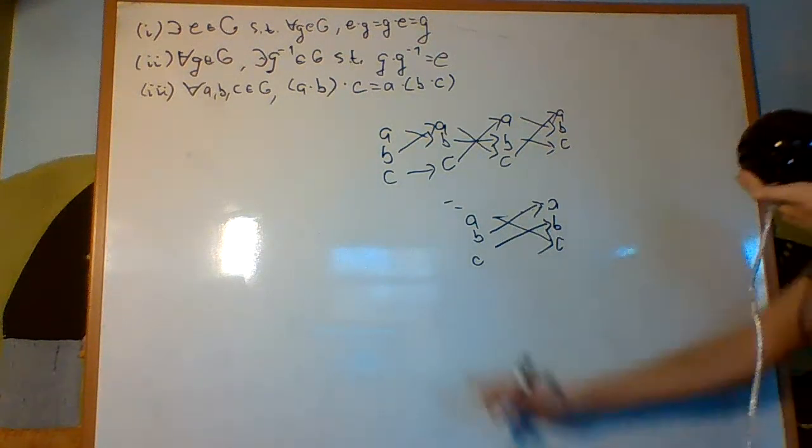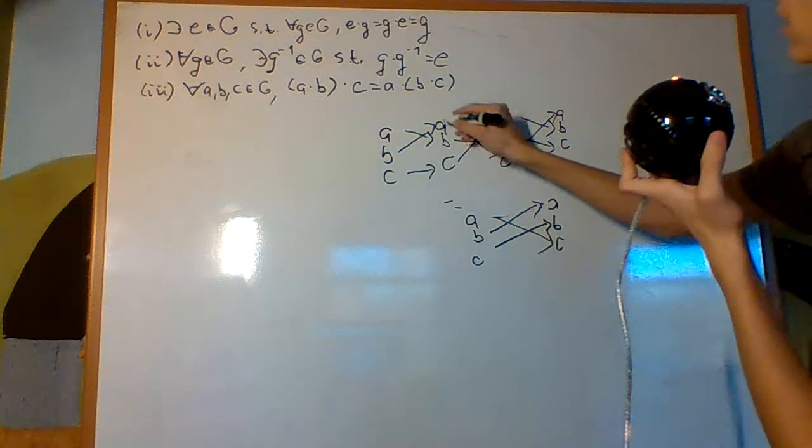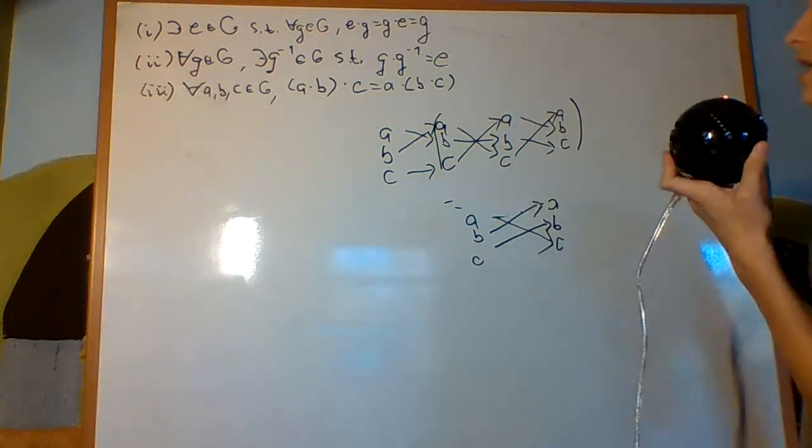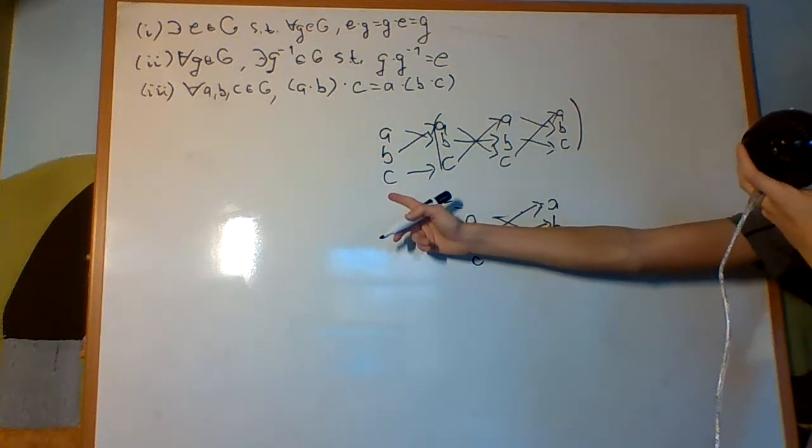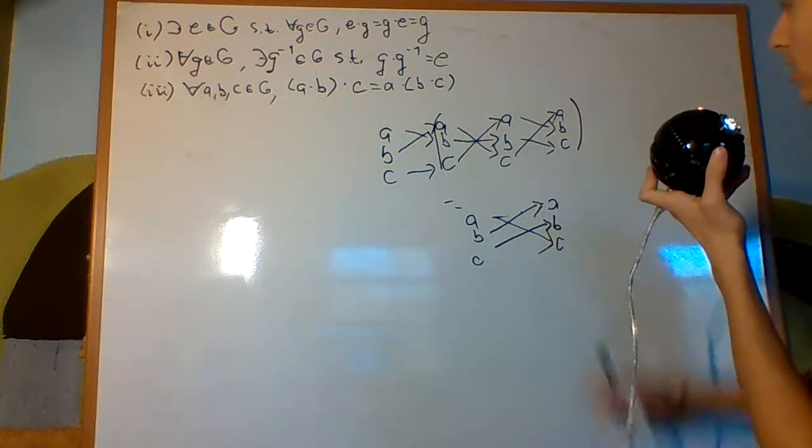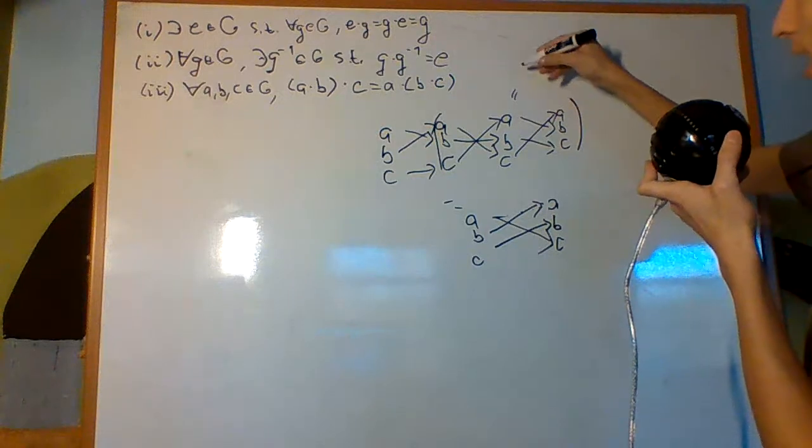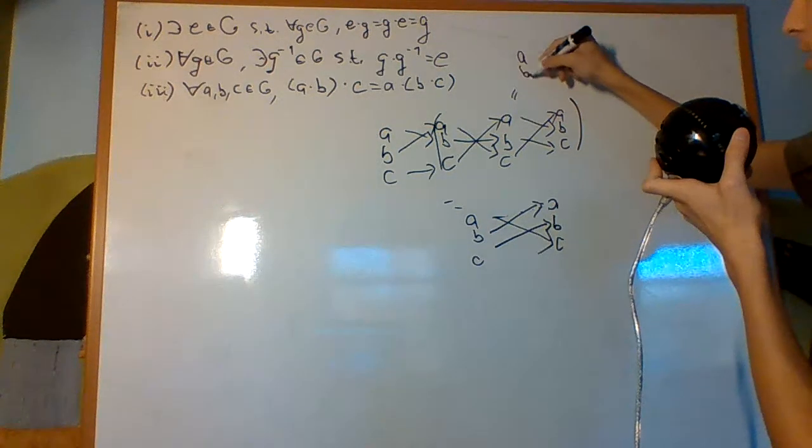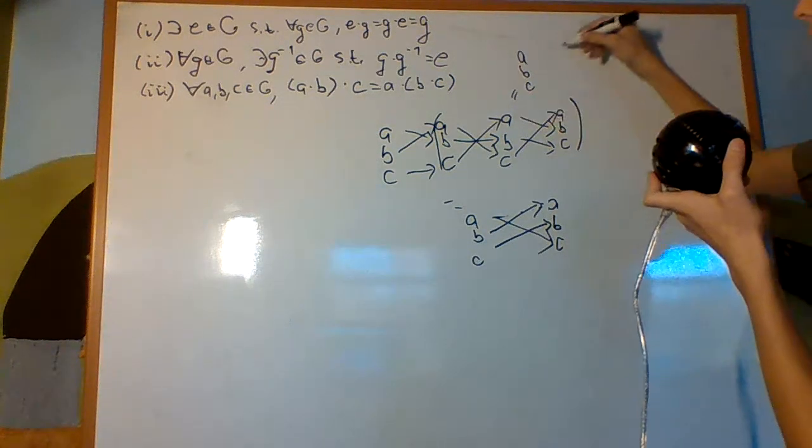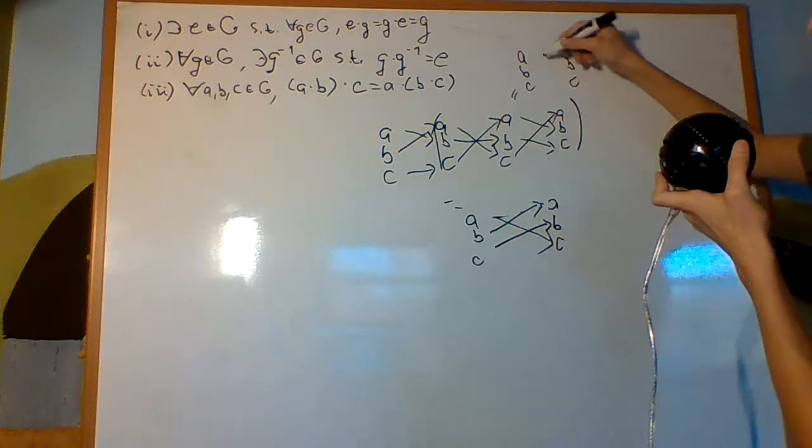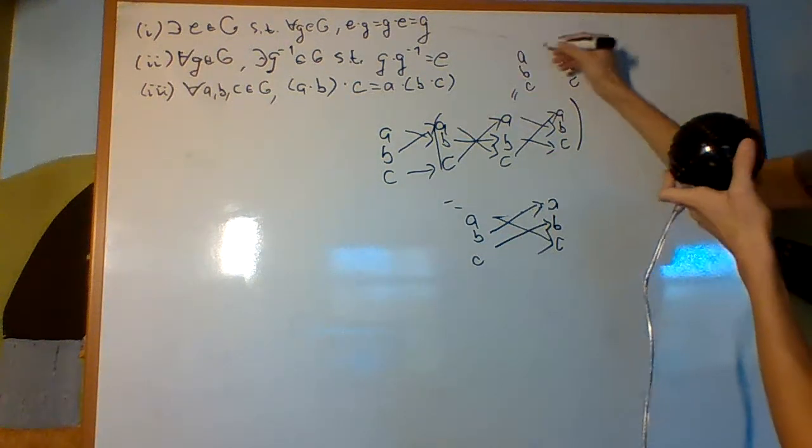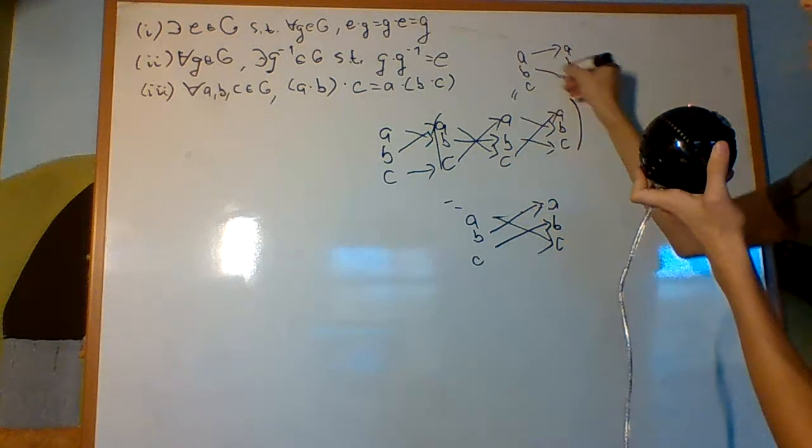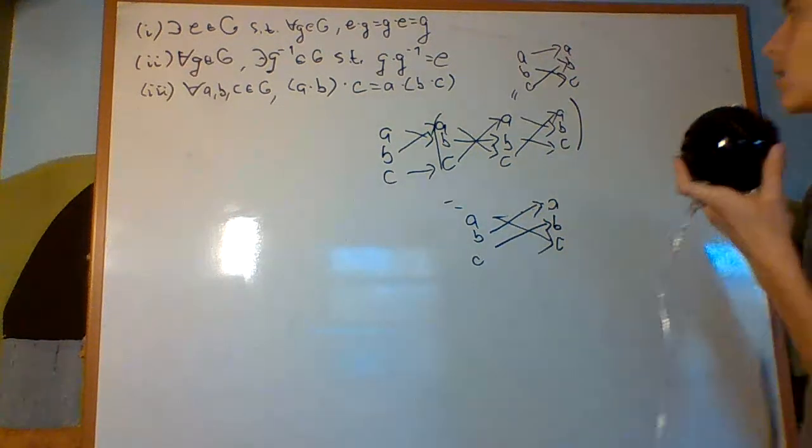what if instead of doing that, I just took this right here, and then looked at the permutation on the left right there? So, what do I get out of this? So, I get A, B, C, A, B, C, A goes to C, which goes to A. A is fixed. B goes to B, which goes to C, and C goes to B. Okay?